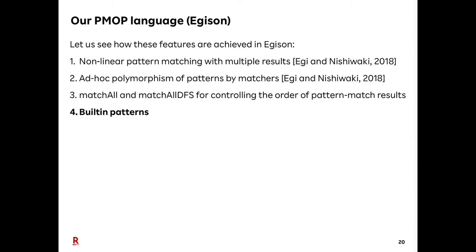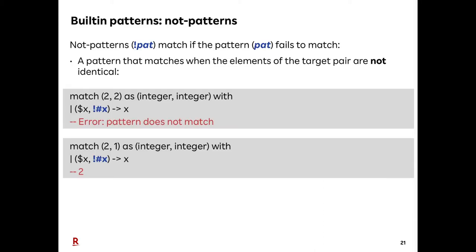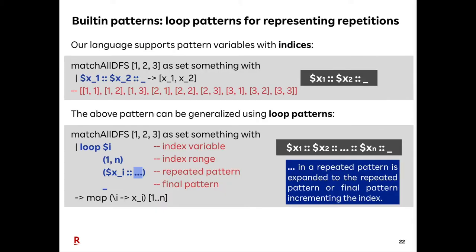Next, let me introduce the built-in patterns of EGISON. EGISON supports several special built-in patterns. Not-patterns are one of these. Here, we demonstrate a pattern that matches when the elements of the target pair are not identical. Not-patterns are represented using an exclamation mark. With a not-pattern, the pattern matching succeeds.